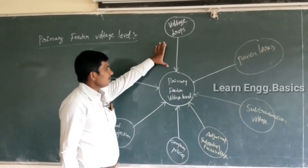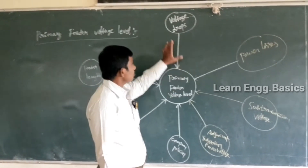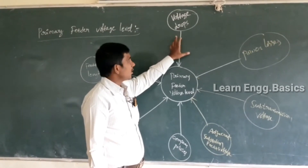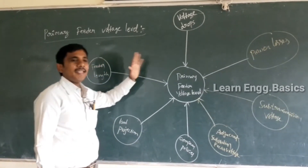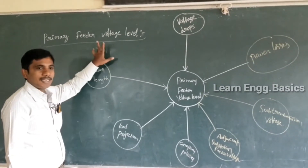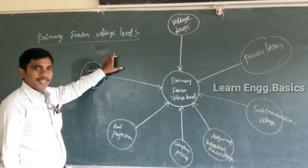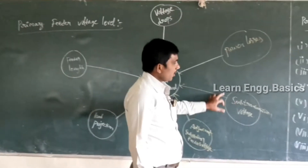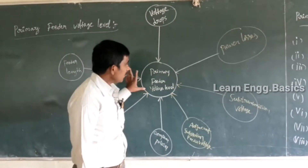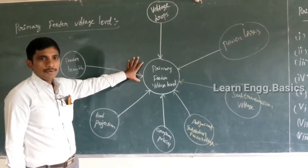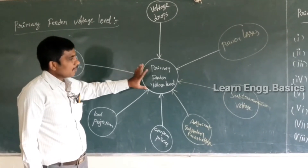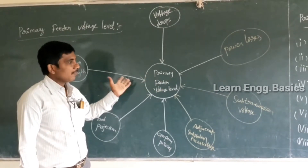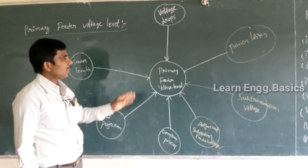Another factor is voltage drops. The primary feeder voltage level also depends on voltage drops. If the distance is more, a large voltage drop will take place. Hence, the sending-end voltage, that is the primary feeder voltage level, will be 66 kV or 33 kV. The sub-transmission voltage level also decides the primary feeder voltage level — for example, if the distribution substation voltage level is 11 kV, then the primary feeder voltage level is set accordingly.